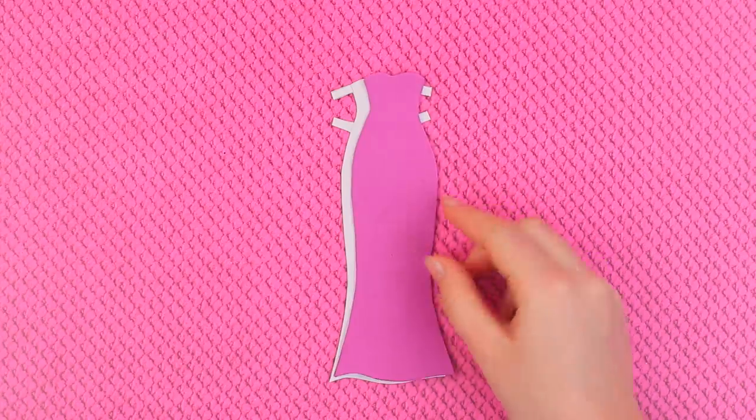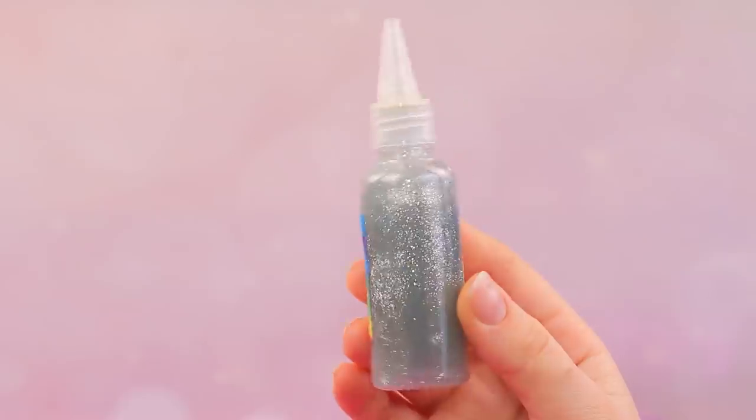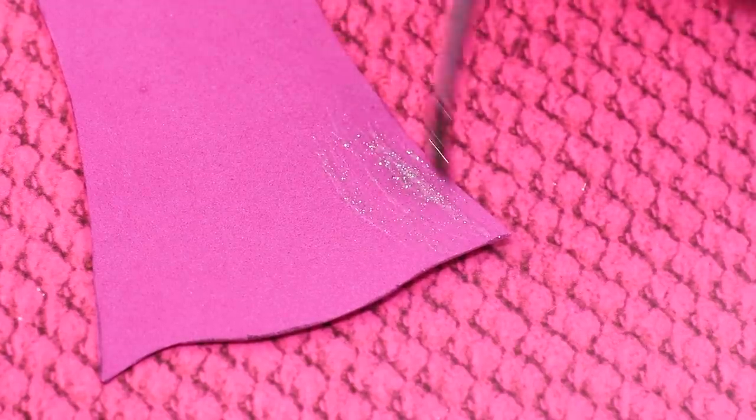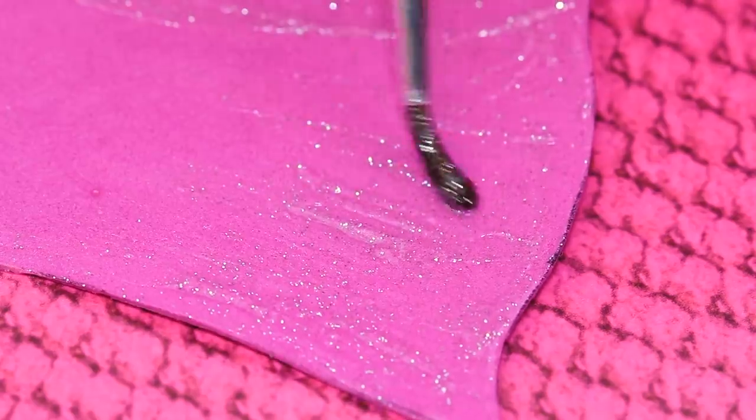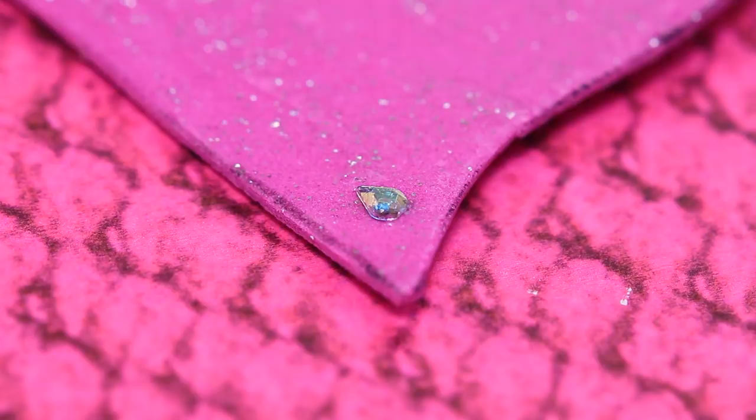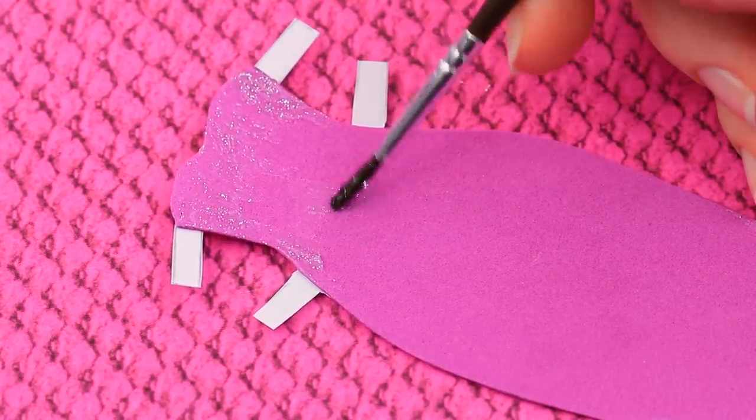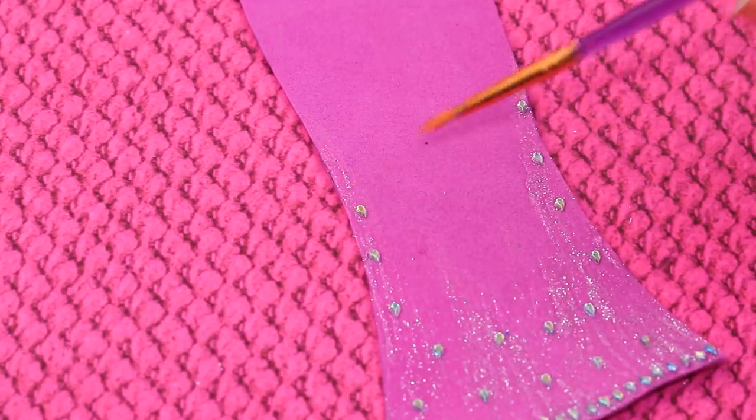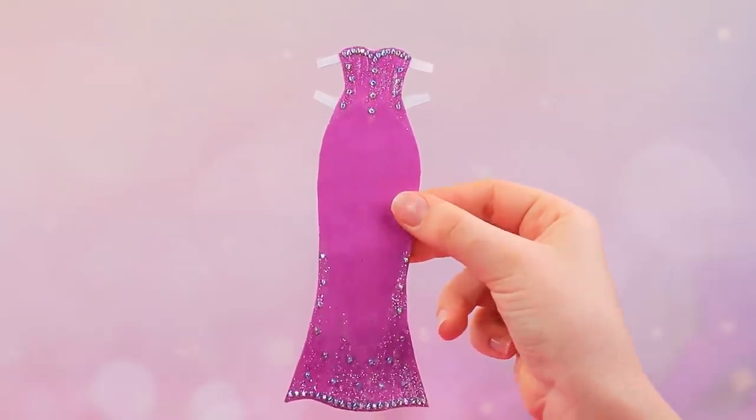Now that the dress is cut out, we just have to decorate it! Take silver glitter glue and apply it to some spots using a brush. Attach mini rhinestones while you're at it. We got a stunning evening gown!